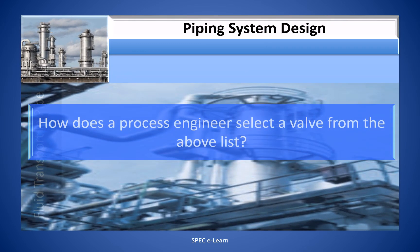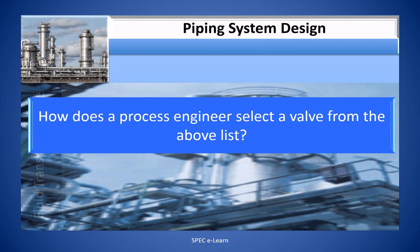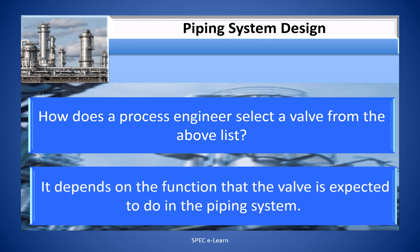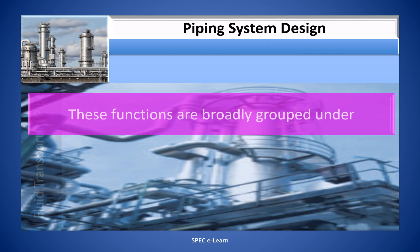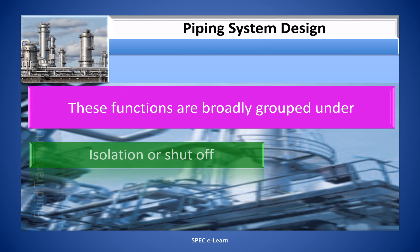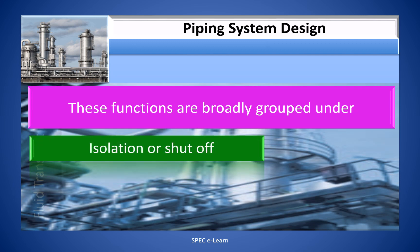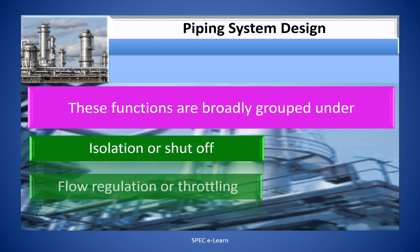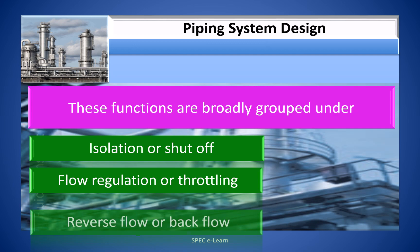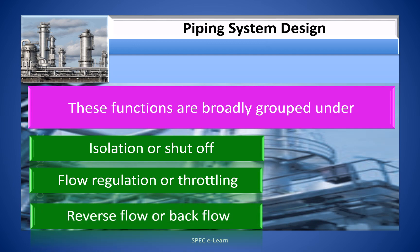How does a process engineer select a valve? It depends on the function the valve is expected to perform in the piping system. These functions are broadly grouped under isolation or shutoff, flow regulation or throttling, and reverse flow or backflow prevention.